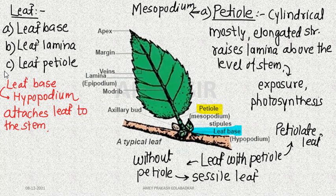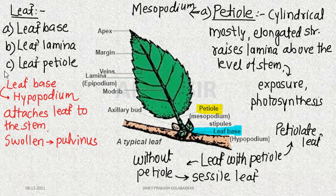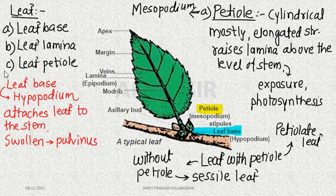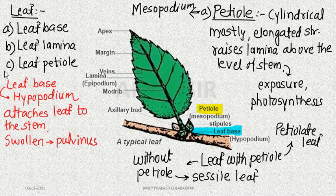Sometimes the leaf base becomes swollen, and when it is swollen I refer to it as a pulvinus leaf base. The pulvinus leaf base is responsible for sleep movements and shock movements. The classic example of this is the Mimosa plant — the touch-me-not plant.